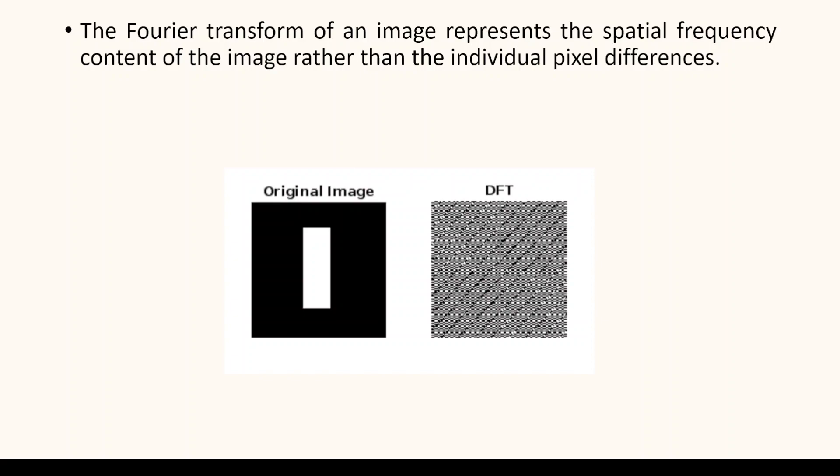To calculate the Fourier transform of an image, the 2D Fourier transform algorithm is applied to the image matrix. This involves performing a series of complex mathematical calculations to determine the frequency components. In summary, the Fourier transform of an image does not directly represent the pixel difference between neighboring pixels. Instead, it represents the spatial frequency content of the image and provides information about the amplitude and phase of different frequency components present in the image.